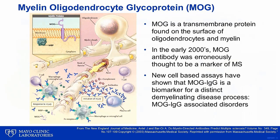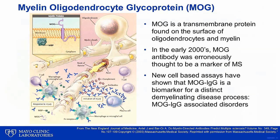More recently, antibodies against myelin oligodendrocyte glycoprotein, or MOG, have been discovered, which is the newest biomarker for a subset of patients with optic neuritis and several other demyelinating phenotypes. MOG is a transmembrane protein found on the surface of oligodendrocytes. In the early 2000s, MOG antibody was erroneously thought to be a marker of MS based on nonspecific older generation assays with MOG in its non-conformational form. However, with recent transfected cell-based assays with MOG in its native conformational form, there is general agreement that MOG antibody is a biomarker for a distinct demyelinating disease process, MOG-associated disorders, which is different from both MS and aquaporin-4 seropositive NMOSD.